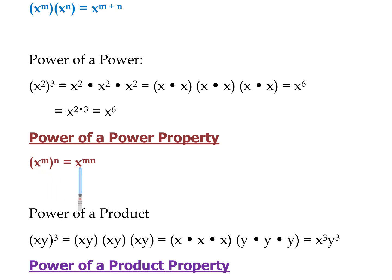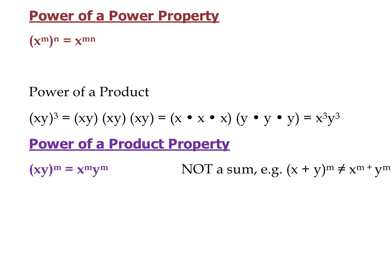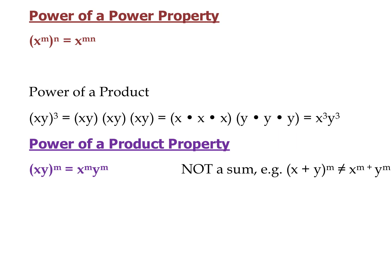The base stays the same. Now we have the property for a power of a product. We have a product in the parentheses, and this whole product is raised to the 3rd power. Writing it out, we get x times x times x and y times y times y, which is x to the 3rd and y to the 3rd. So when we have a product raised to a power, we can take each factor in that product to that particular power.